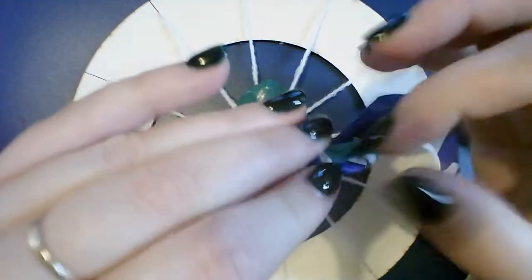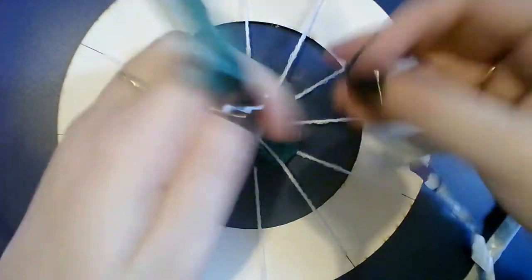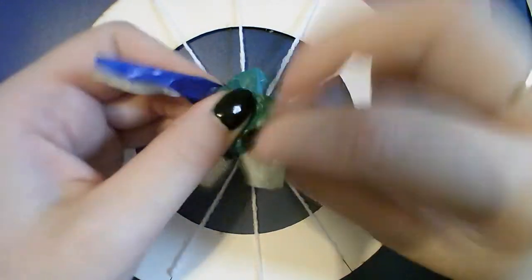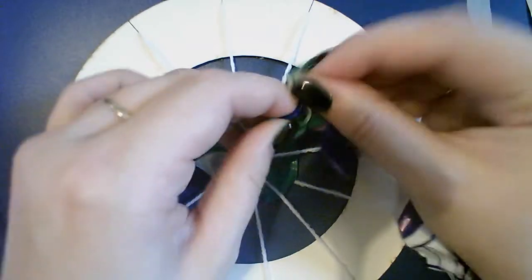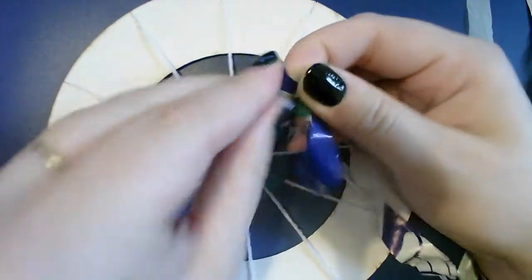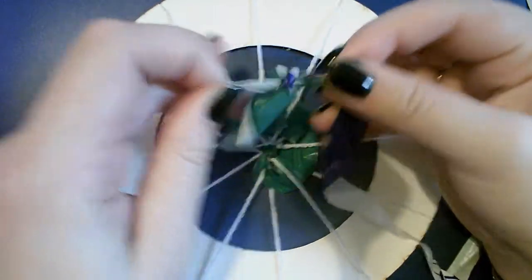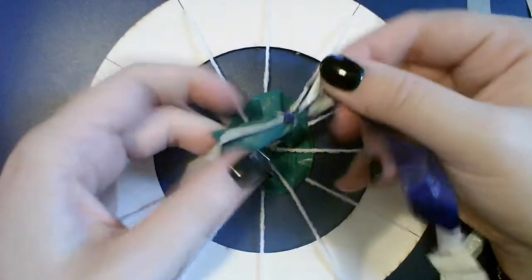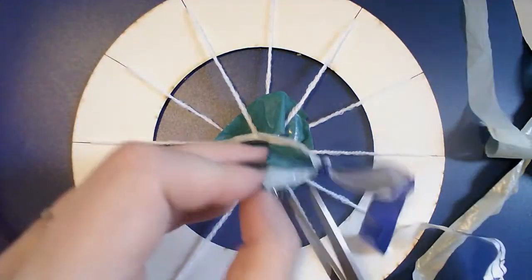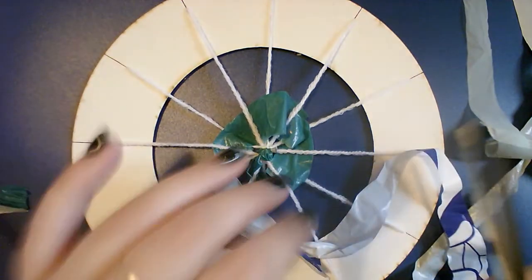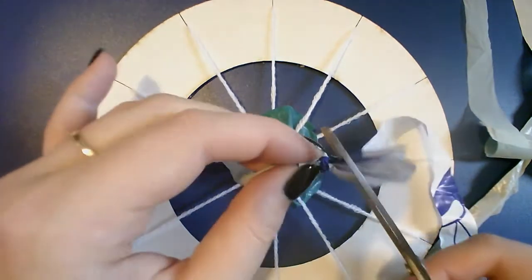So I'm just going to knot them two pieces together. It will be quite fiddly. If you need help from the teacher, that's totally fine. Or if you can ask someone around you, if they're knotting it well, they can help you out. So make sure it's nice and tight. I'm just going to cut these little pieces off to make it a little bit neater.